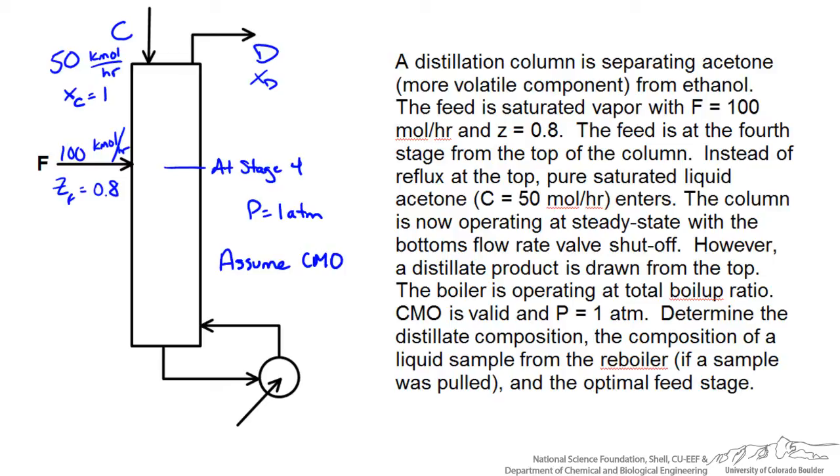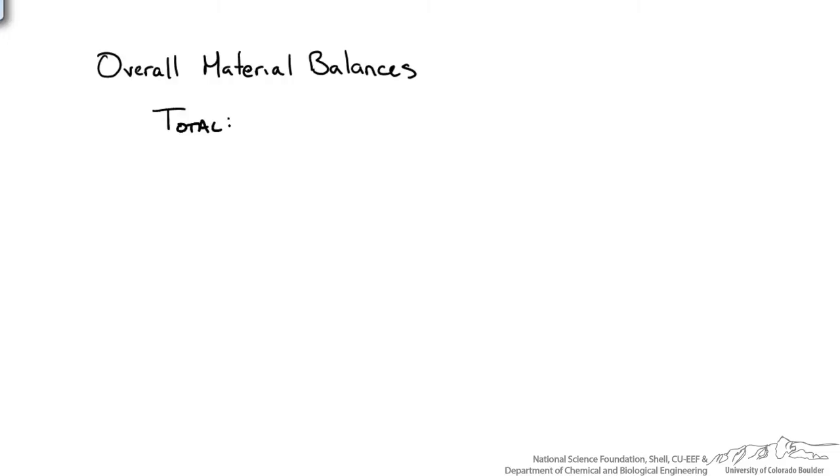The first place to start would be an overall material balance for our column. We know whatever goes in must come out. So we have feed F plus a pure stream of acetone C entering the top, and this is only coming out from our distillate product D. We are given information for these values so we can plug that in and right away see what our distillate composition is going to be.